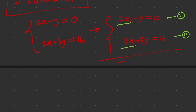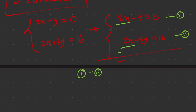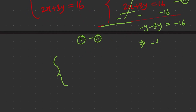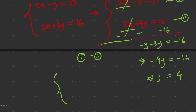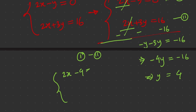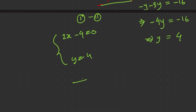We change the signs of equation 2: negative 2x, negative 3y, negative 16, and add. The first terms eliminate, leaving minus y minus 3y equals minus 16, which gives minus 4y equals minus 16, so y equals 4. Substituting y equals 4 into equation 1: 2x minus 4 equals 0, giving x equals 2 and y equals 4.